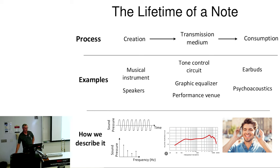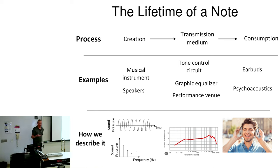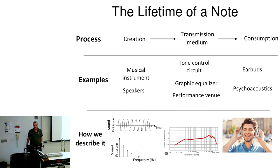How do we create music? A musical instrument — or you may just be listening to birds outside, or it may come out of a speaker. How do we get music from one place to another? We can do things like tone control circuits, graphic equalizers, but more important for this venue, we're going to have performance venues. We consume music maybe with earbuds, and your psychoacoustical system is a big part of consuming music.